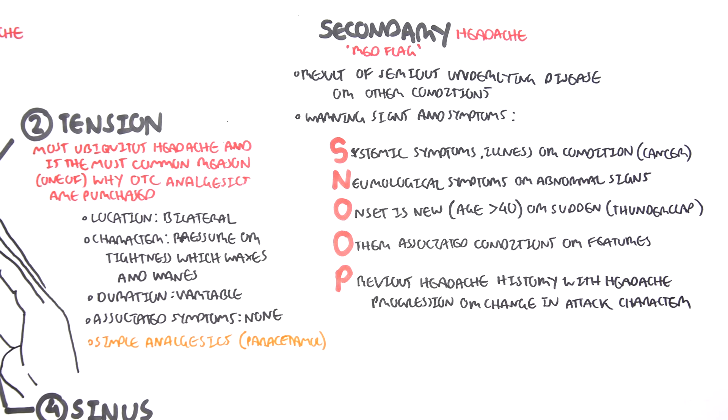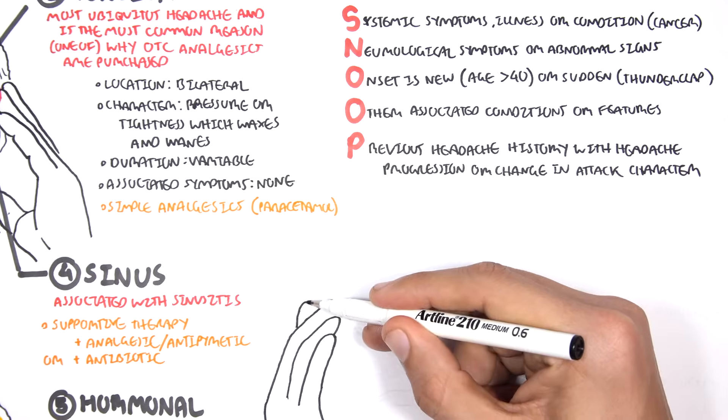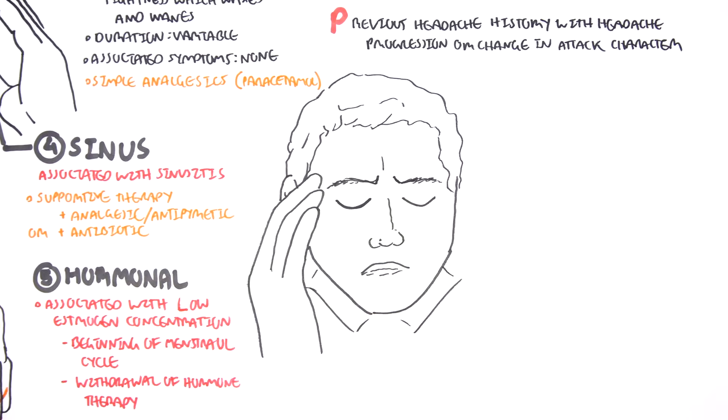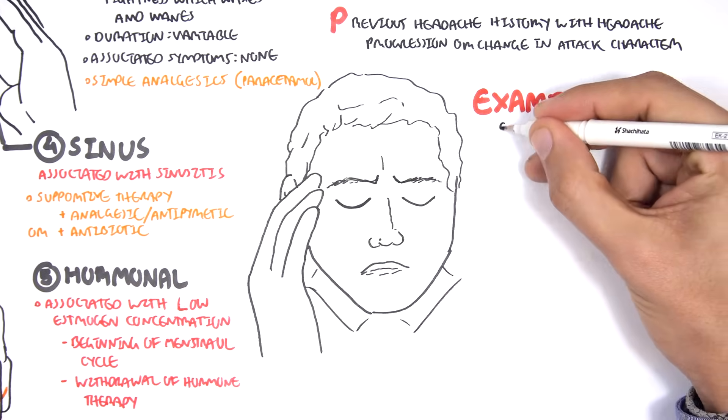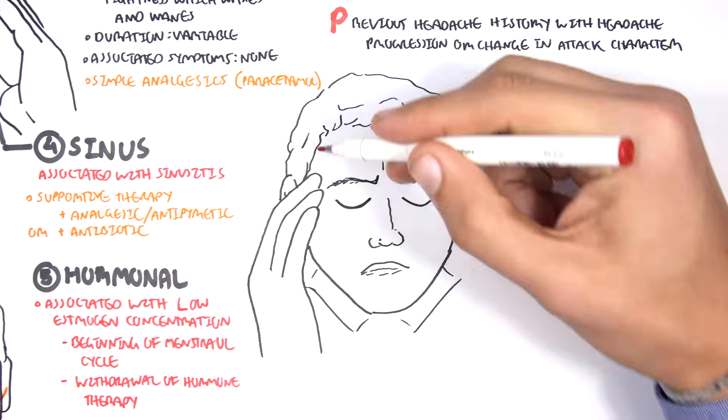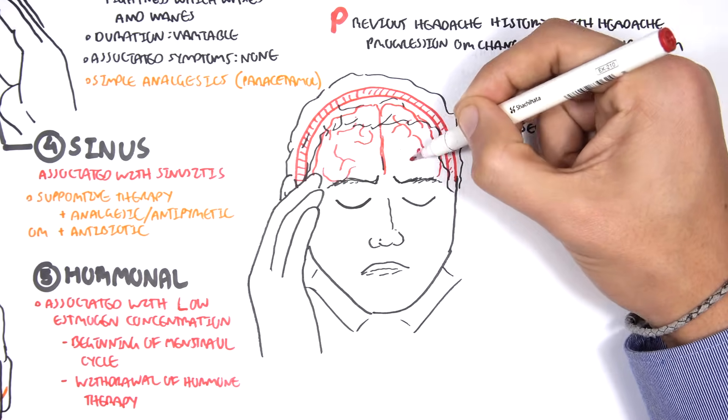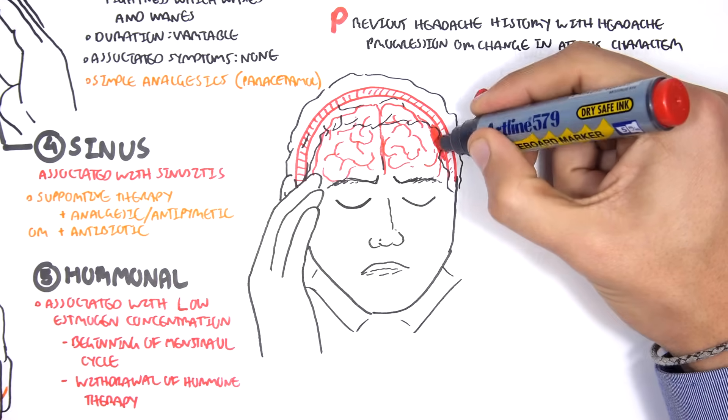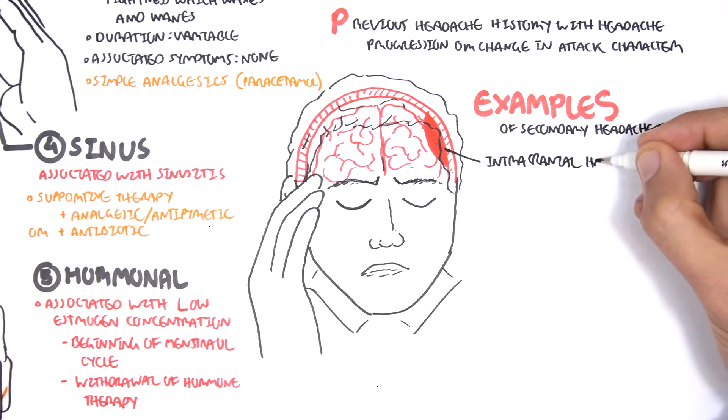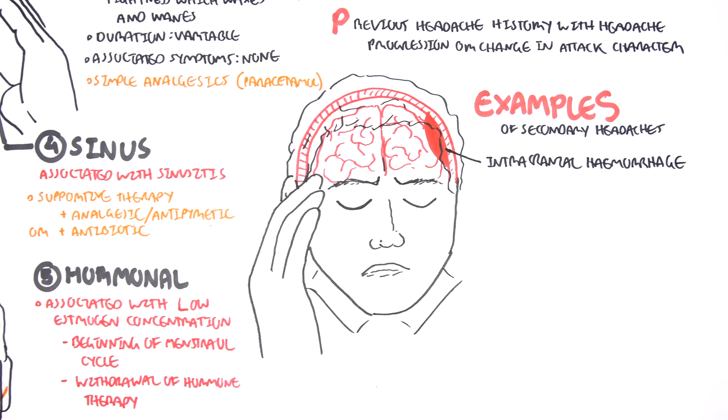Essentially what SNOOP is trying to say is that the headache that the person presents with is very abnormal, and it's got all these signs and symptoms which will tell you, hang on a second, this is not normal, this is a more serious problem, this is more serious than a tension headache or a migraine. Let's look at some examples. Here I am drawing a person who has a very serious headache. Examples of secondary headaches include intracranial hemorrhage, and this can include subdural, epidural, or subarachnoid hemorrhage.